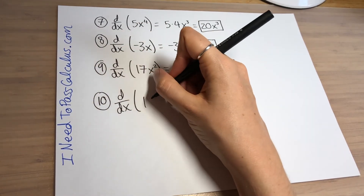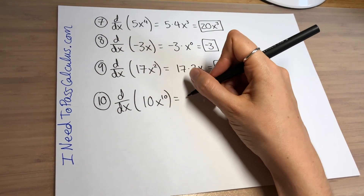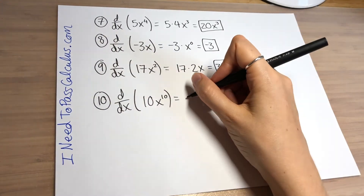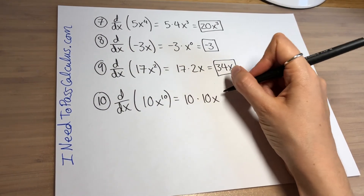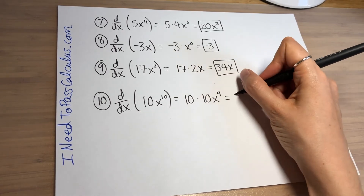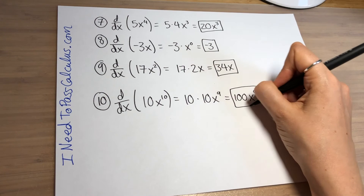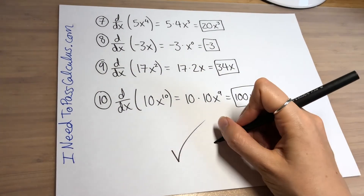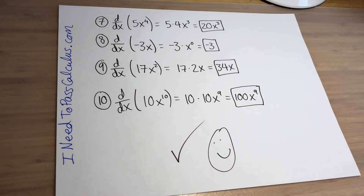Last but not least, problem 10: let's take the derivative of 10x to the 10th power. See if you can pause the video and do it on your own. The 10 stays out front and you bring down the 10 from the exponent — 10 times 10 — giving x to the 9th power because 10 minus 1 is 9. Your final answer is 100x to the 9th.